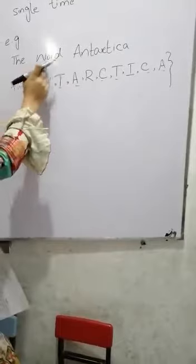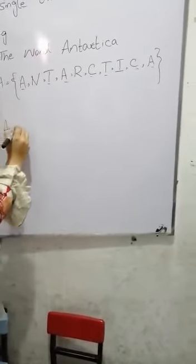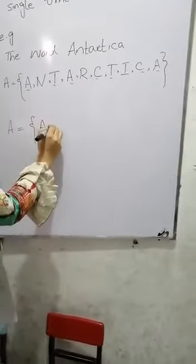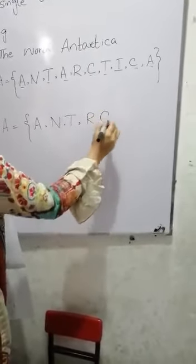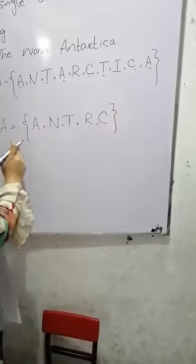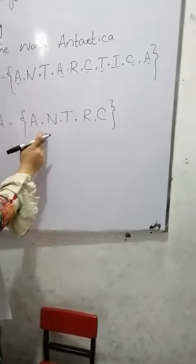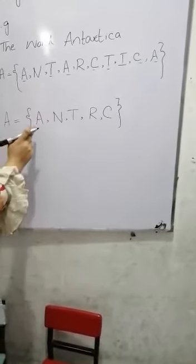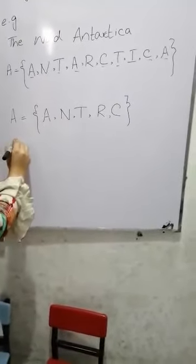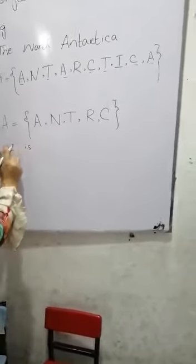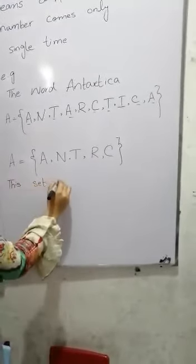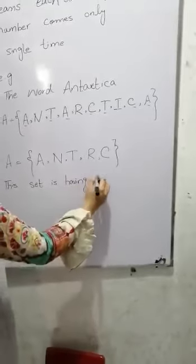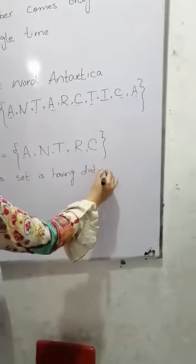If we write the word 'Antarctica' in the correct set form — A, N, T, R, C, I — then each and every letter appears only one time. So this set is having distinct objects.